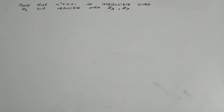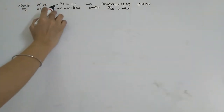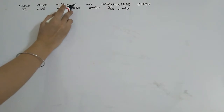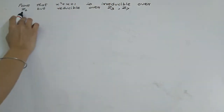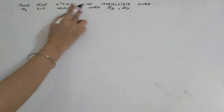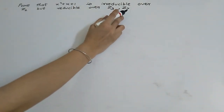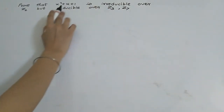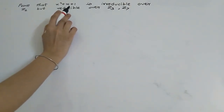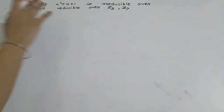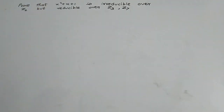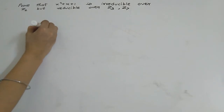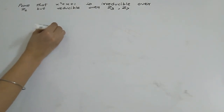Hi guys, welcome to my channel Maths with KM. In this video we are going to see one example: prove that x squared plus x plus 1 is irreducible over Z₂ but reducible over Z₃ and Z₇. We had already seen what irreducible and reducible mean in the previous video.